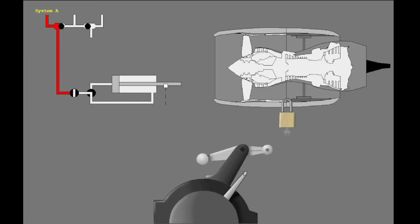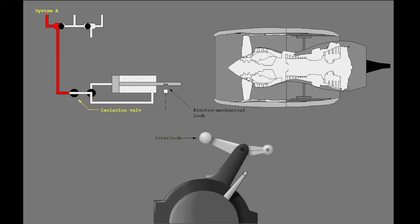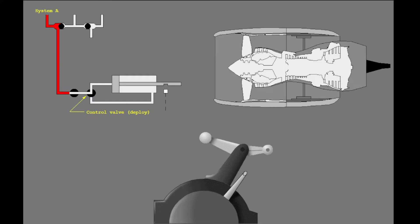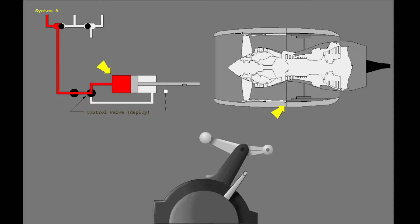Raise the reverse thrust levers to the interlock stop position to see how the N1 thrust reverser system operates. The initial motion of the reverse thrust levers releases the electromechanical lock and unlocks the translating sleeves. Next, the isolation valve opens if the air-ground sensor is in the ground mode or a radio altimeter shows altitude of less than 10 feet. With the isolation valve open, the control valve moves to the deploy position and hydraulic pressure starts to move the translating sleeves to the deployed position.